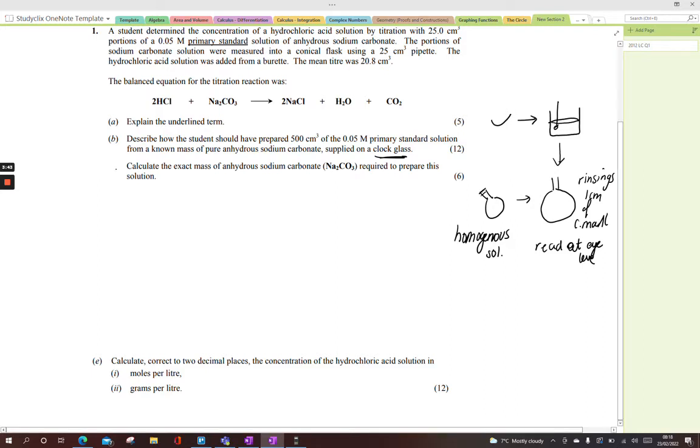Part B is a calculation. Calculate the exact mass of anhydrous sodium carbonate required to prepare this solution. Once I see that big M, that molarity, I'm going to work with that. 0.05 M means 0.05 moles in a liter. The big M means moles in a liter. Here I'm not dealing with a liter.